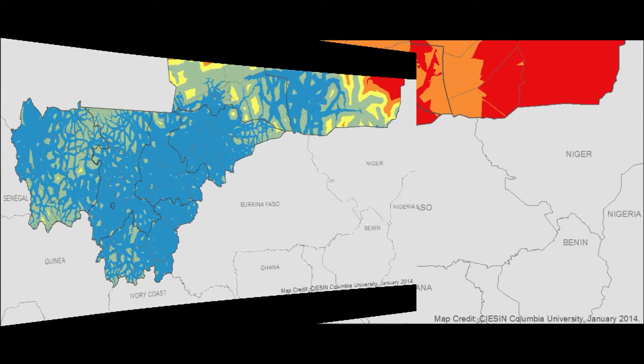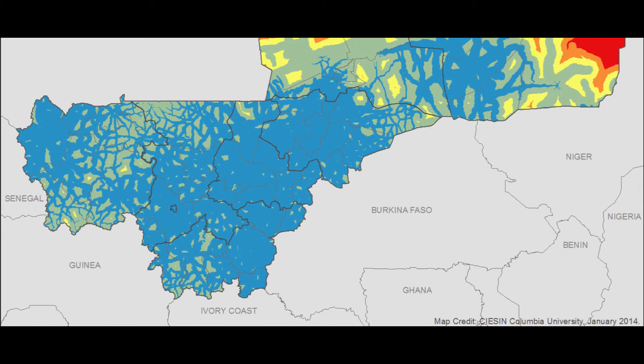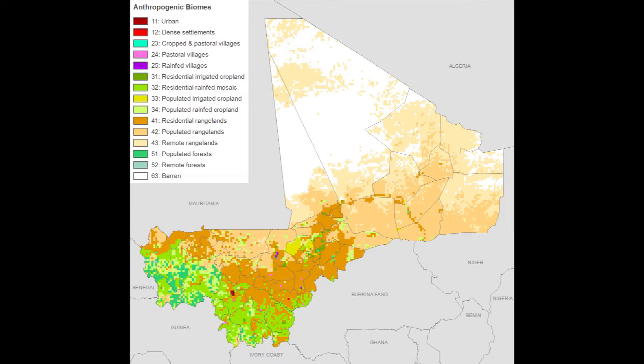Our lack of adaptive capacity layers included indicators such as the education level of mothers, market accessibility, and irrigated areas. This component included one CIESIN dataset — Anthropogenic Biomes Version 1 — which provides some indication of livelihood zones. The results for each component are shown in the following three maps.